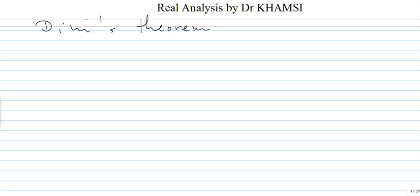One may want to look at the history of Dini. In any case, what do we have? We have a sequence of functions Fn defined on a subset A, and we assume two things: that the Fn's are all continuous.